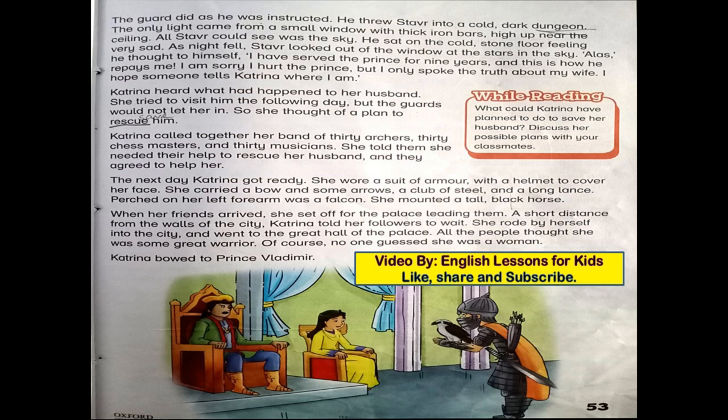Katrina heard what had happened to her husband. She tried to visit him the following day but the guards would not let her in, so she thought of a plan to rescue him. Katrina called together her band of 30 archers, 30 chess masters, and 30 musicians. She told them she needed their help to rescue her husband and they agreed. The next day, Katrina got ready. She wore a suit of armor with a helmet to cover her face. She carried a bow and some arrows, a club of steel, and a long lance. Perched on her left forearm was a falcon.